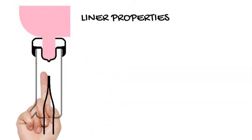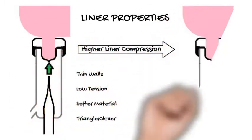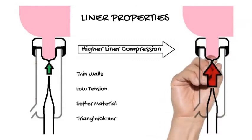Compressive load is also affected by the characteristics of the liner. Liner walls that are thick, tough, or stretched under higher tension will increase the risk of hyperkeratosis.